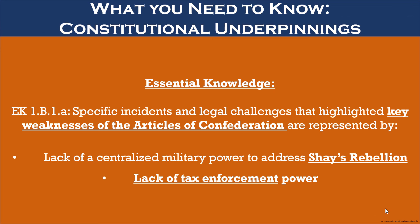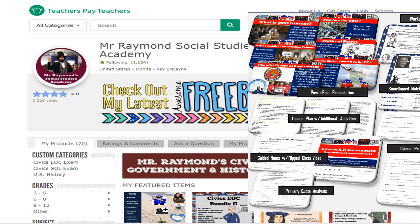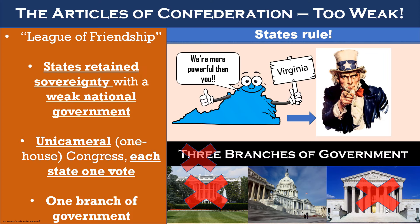For your exam, you will need to identify the weaknesses of the Articles of Confederation. Under the authoritative-sounding 'league of friendship,' as they call themselves in the Articles, one of the biggest things to remember is that the states retained most of the power or sovereignty, with a very weak central or national government.